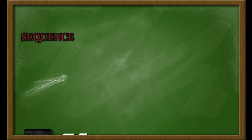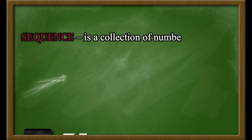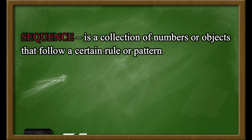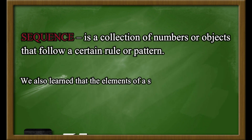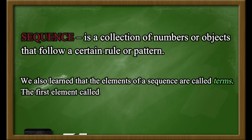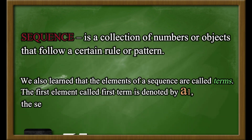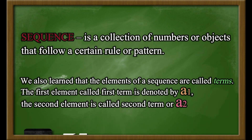We define sequence as a set of numbers or objects that follow a certain pattern or rule. We also learned that the elements of a sequence are called terms. The first element, called the first term, is denoted by A1; the second element is called the second term and is denoted by A2, and so on and so forth.